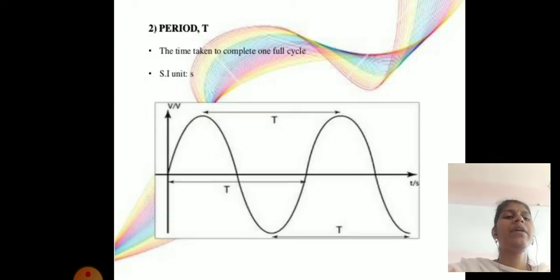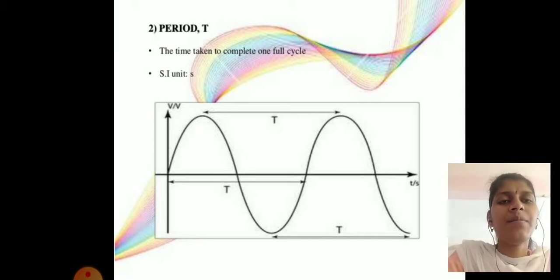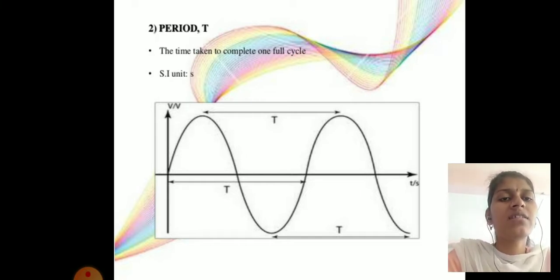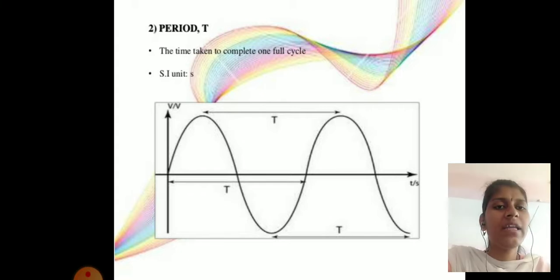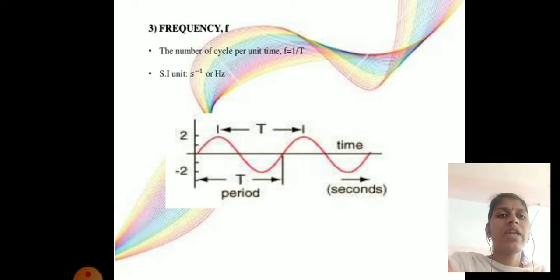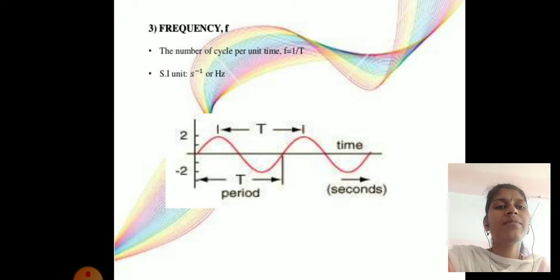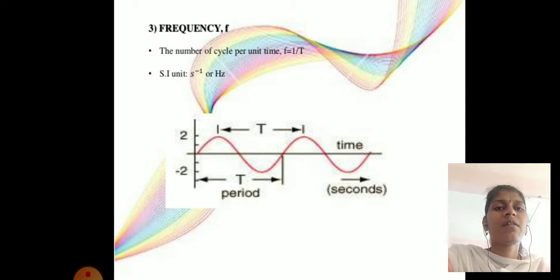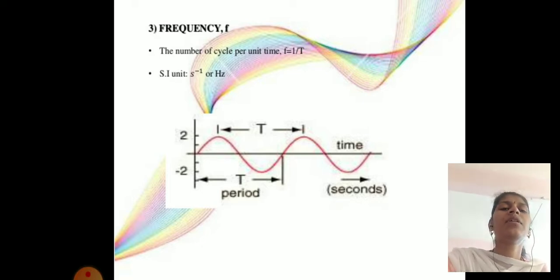Next parameter is period: the time taken to complete one full cycle. The unit of period is the second. Third parameter is frequency, denoted by f. Frequency means the number of cycles per unit time: f = 1/T. The unit of frequency is hertz (Hz).